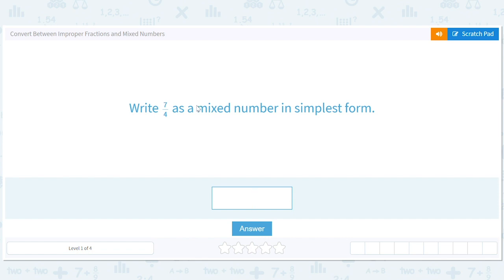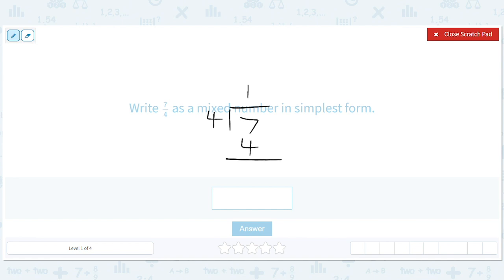Let's convert between improper fractions and mixed numbers. So, we have 7 fourths. The way to do this is to divide 7 by 4. It goes in once. We have a remainder of 3.